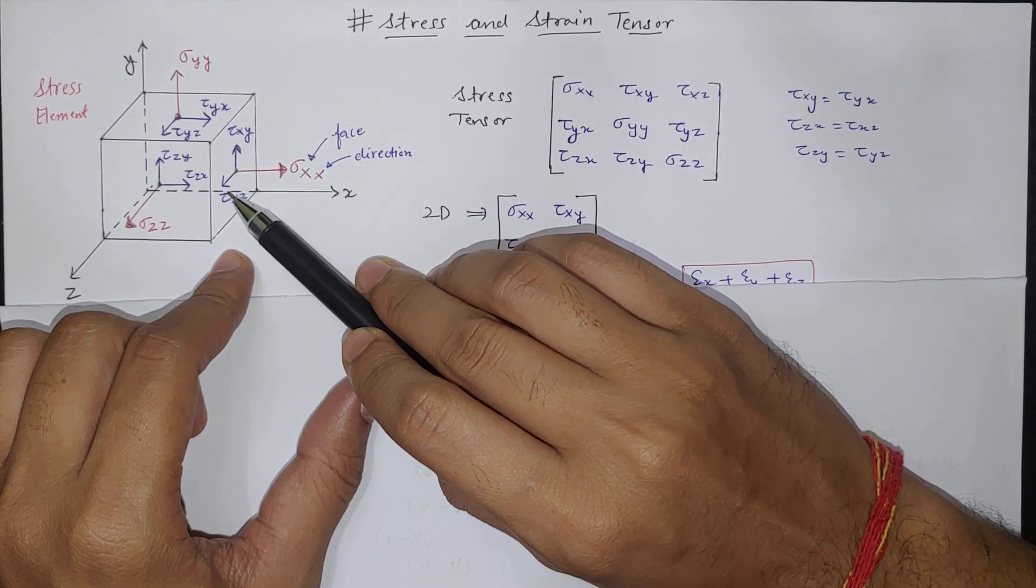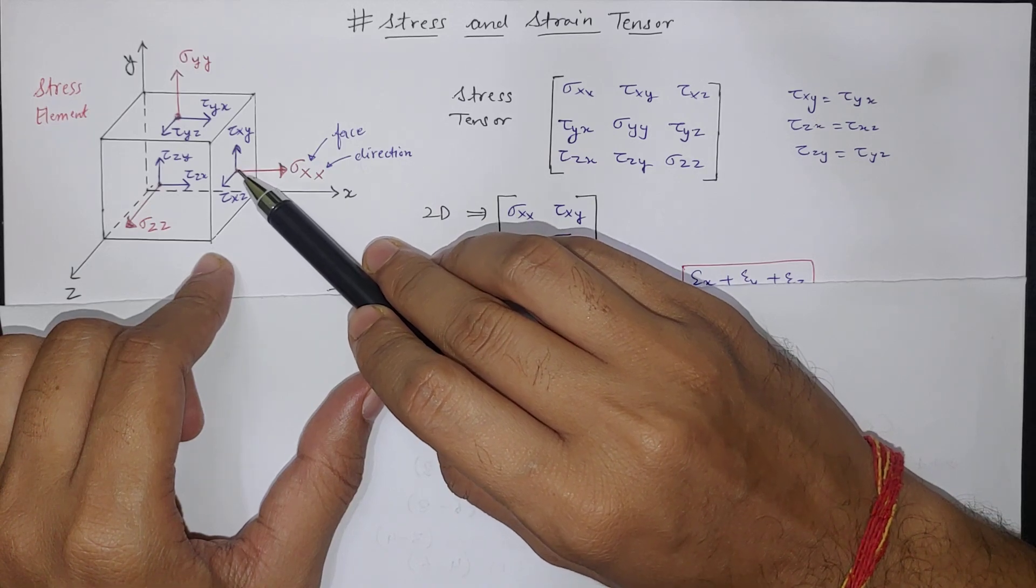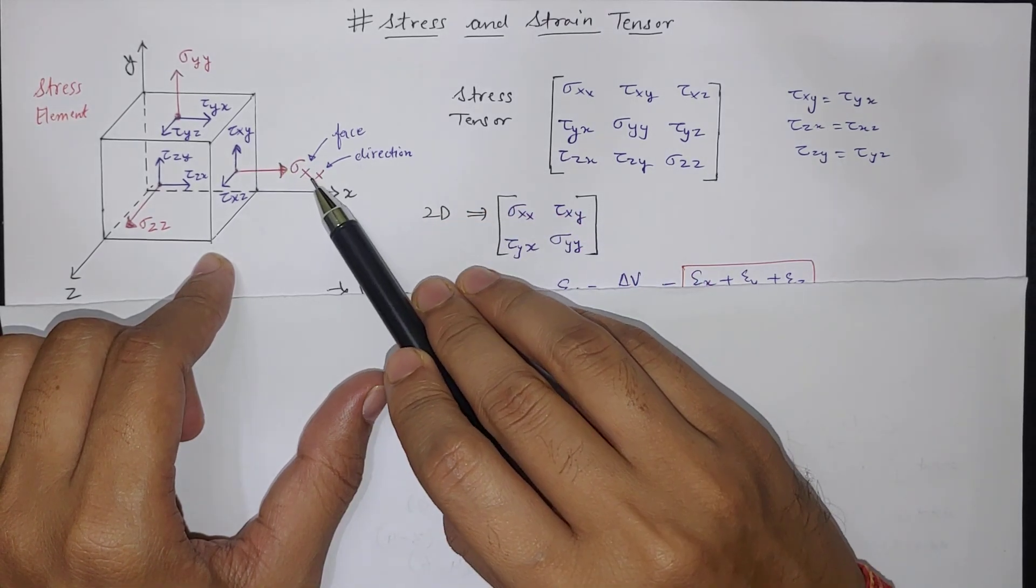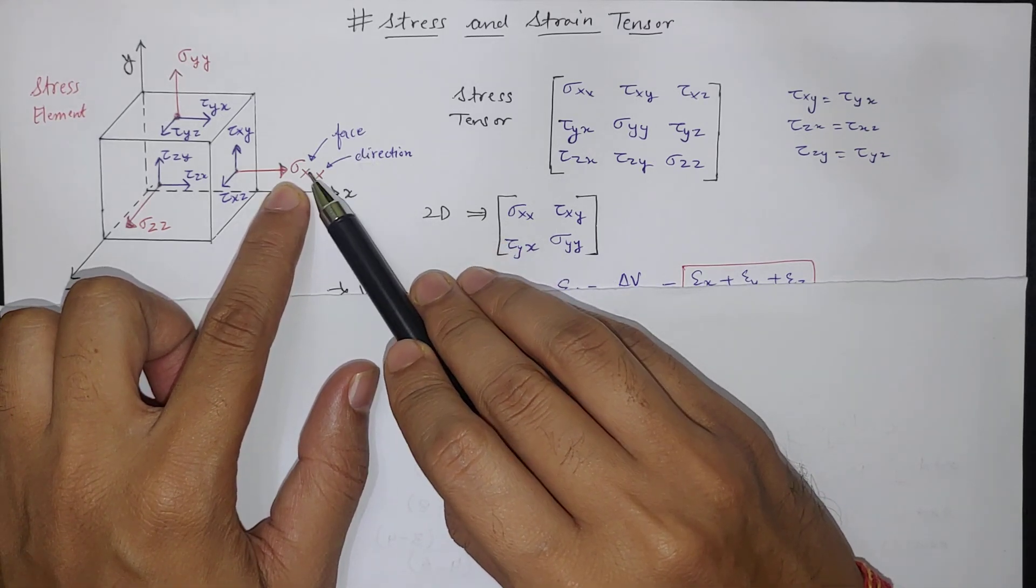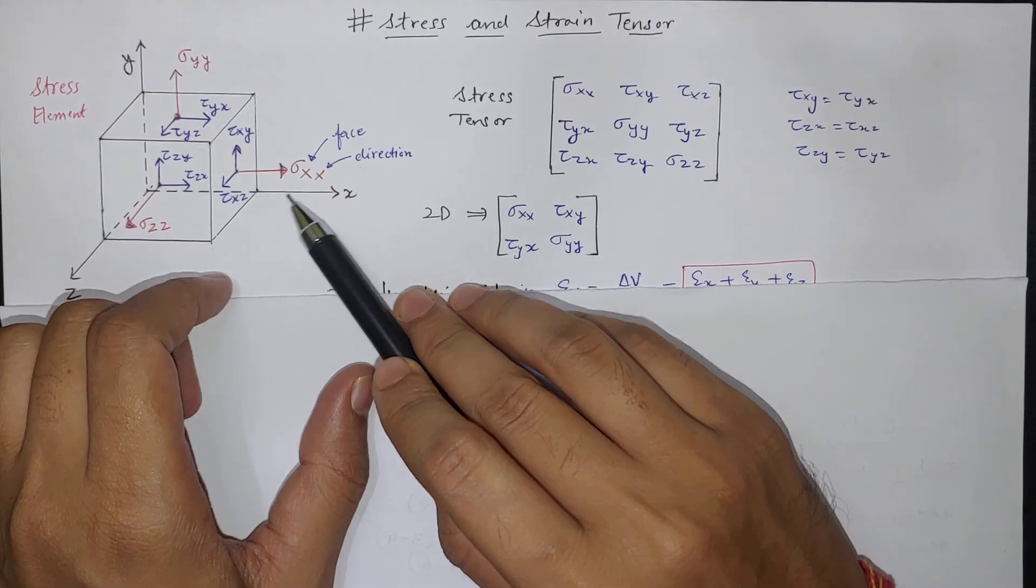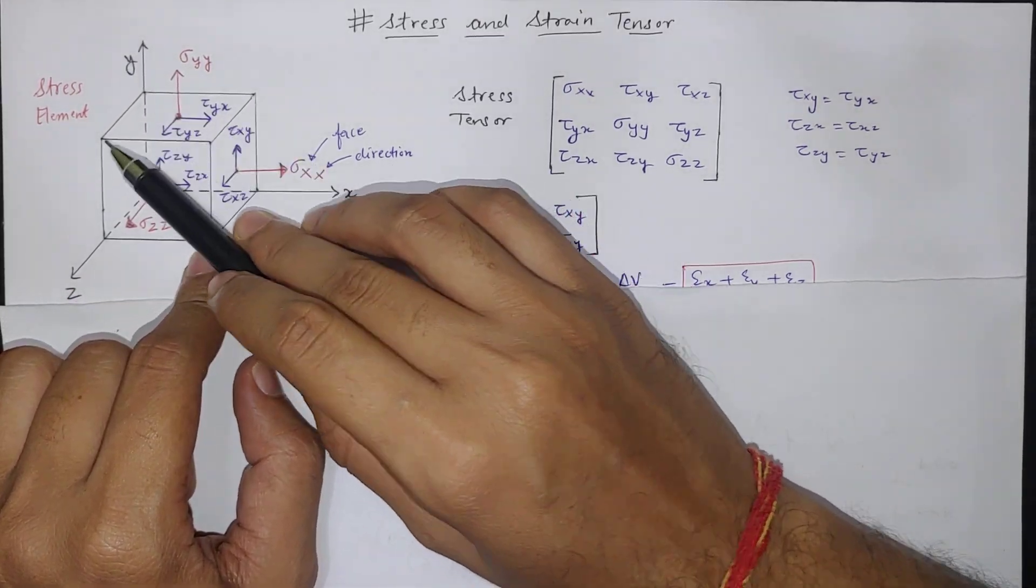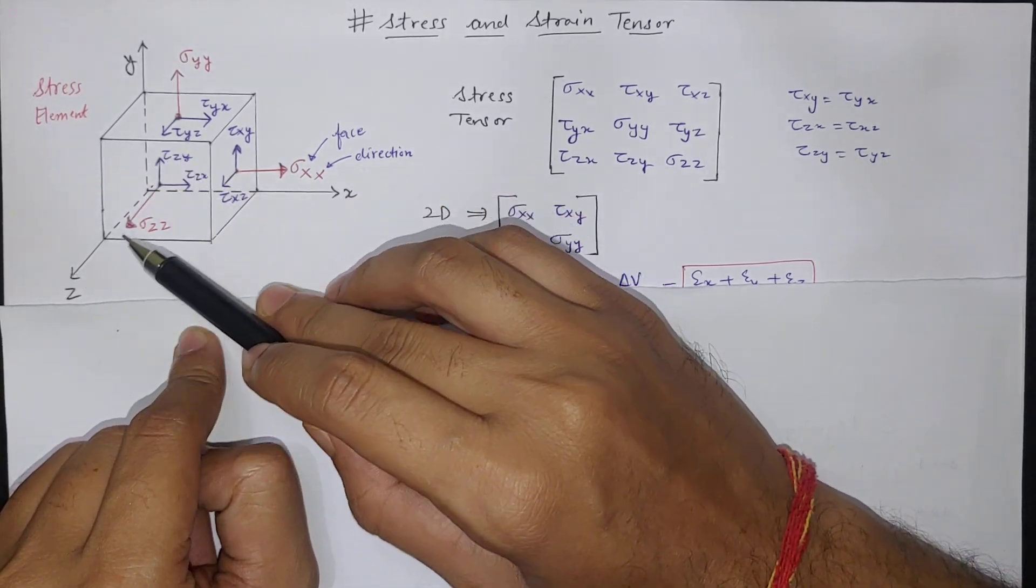So here in X direction if you see tau XZ and Y it is tau XY. So here there are two notation XX means first alphabet is face and second is direction. So this face is called an X face, this is Y face, and this one on the Z axis is Z face.